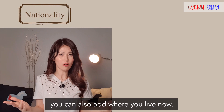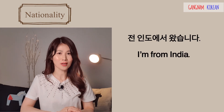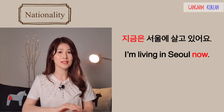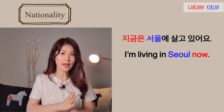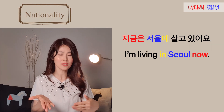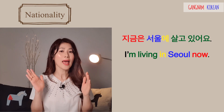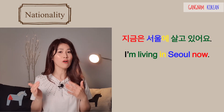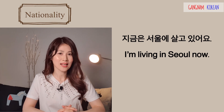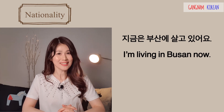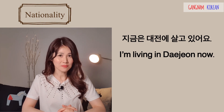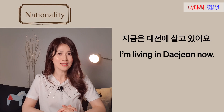After saying where you're from, you can also add where you live now, like this: 전 인도에서 왔습니다. 지금은 서울에 살고 있어요. 지금은 means 'now', 서울에 — 서울 is Seoul and 에 means 'in' or 'at'. And 살고 있어요 means 'am living', so: now I'm living in Seoul. 지금은 서울에 살고 있어요. 지금은 부산에 살고 있어요. 지금은 대전에 살고 있어요.